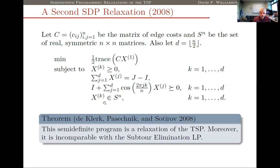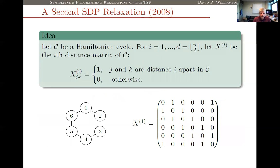This relaxation has d different n×n matrices X^{(k)}, where d is roughly ⌊n/2⌋. What should these matrices represent? If I wanted to show that any given tour was feasible, I should let X^{(i)} be the i-th distance matrix of a cycle. For the cycle 1, 2, ..., n, the (j,k)-th entry of X^{(i)} equals one if vertices j and k are exactly distance i apart in the cycle, and zero otherwise.